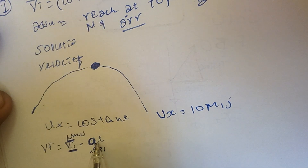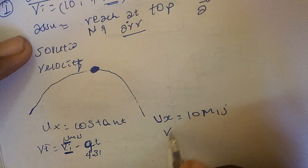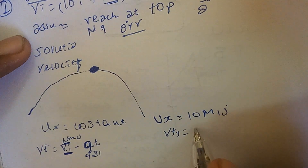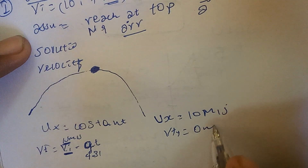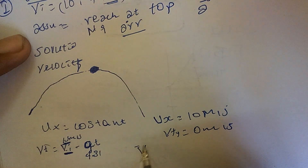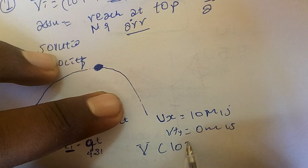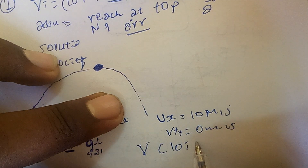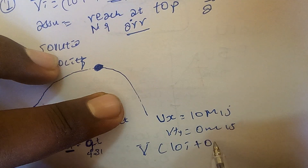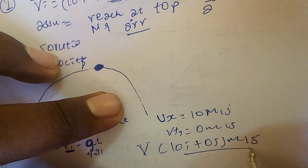This is the same as initial speed. V final minus Y — this is the initial speed minus initial speed. V final in the Y direction is 0 m per second. So the velocity of the ball is 10î plus 0ĵ — that is 10 m per second in the x-direction.